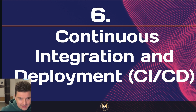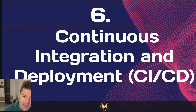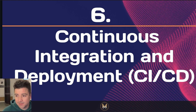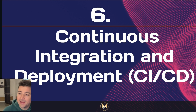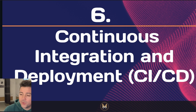Tip number six: implement continuous integration (CI) and continuous deployment (CD). These are pipelines to automate testing, building, and deployment processes. Services like GitHub Actions, Travis CI, or CircleCI can help ensure that changes introduced by contributors do not break the build and are deployed smoothly. Automated testing reduces the risk of regressions and maintains code quality.